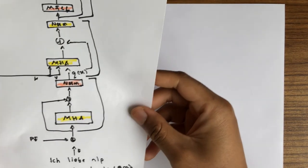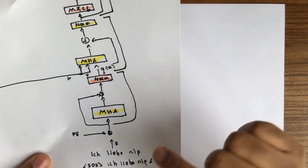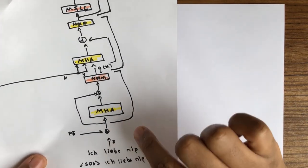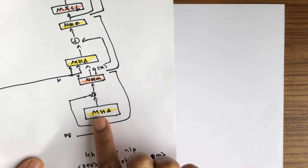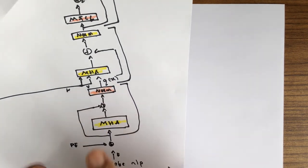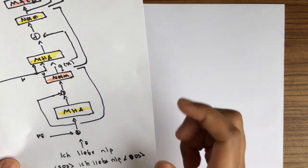Hi everyone. In this video we are going to continue with the transformer decoder layer. In the previous video we have seen the overview of the layer, so in this particular video we are going to be seeing the multi-head attention, the norm layer, and also the embedded layer.